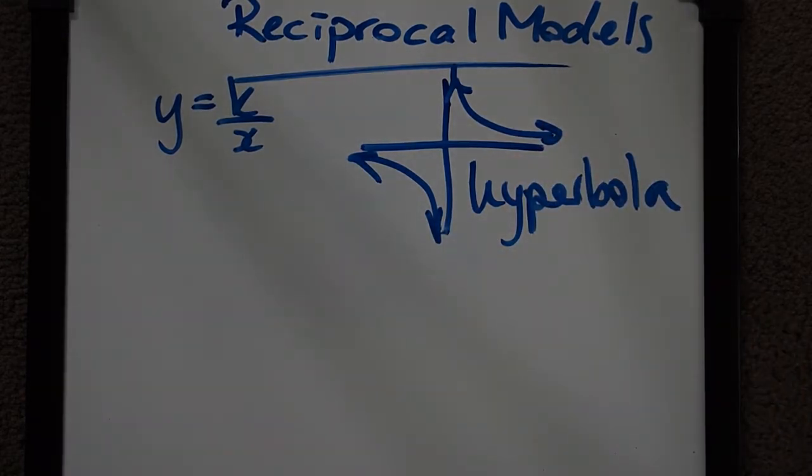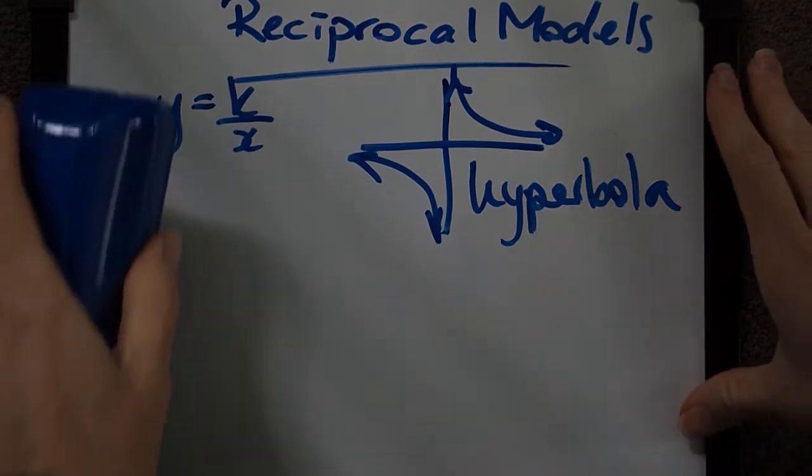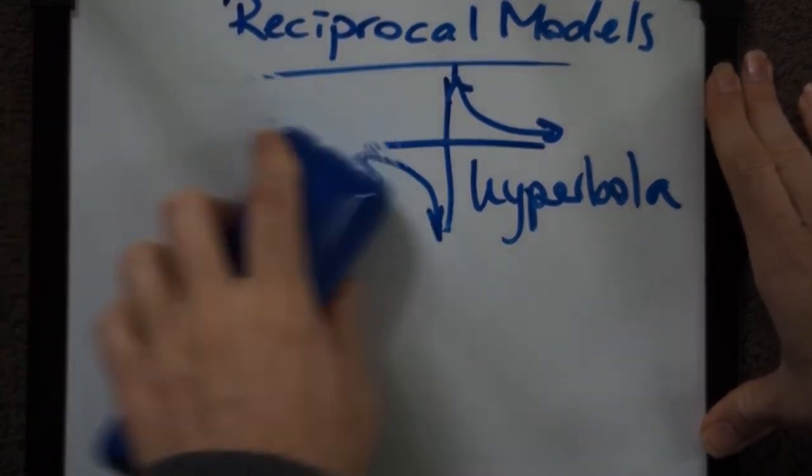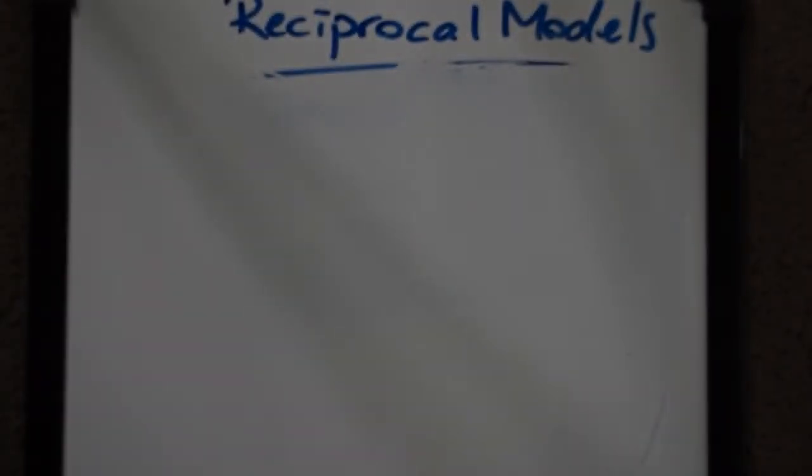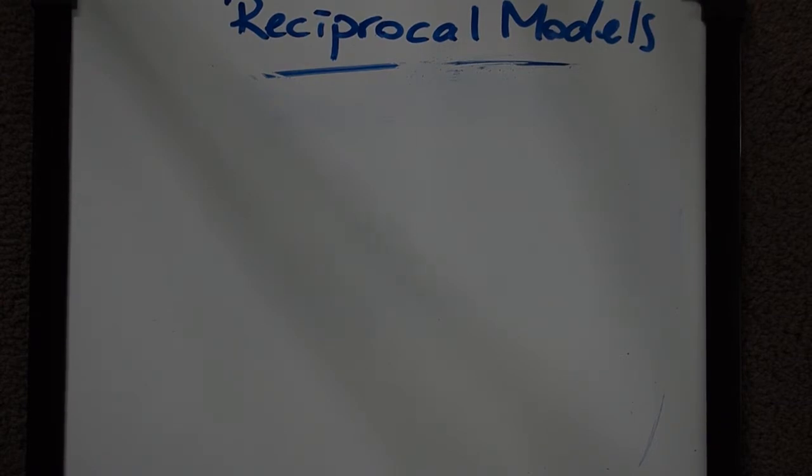Remember that means that the graph never ever crosses either of the axes. There'll be a few different situations where we are able to model a reciprocal function, but it's not always going to look like our classic hyperbola y equals k over x or y equals 1 over x. We need to think about the situation in which it's being used.